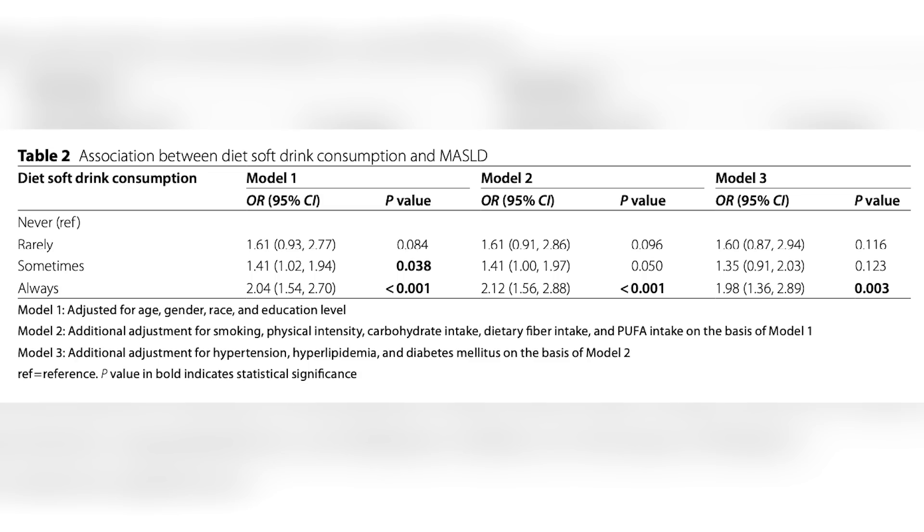That means any difference between the groups can be assumed to be from the treatment rather than some inherent property of the participants themselves. That is the major reason randomized control trials are considered the highest quality level of evidence. I'm not saying it's a bad study — I'm just saying it's important to understand levels of evidence. When we look at this, yes, they did find that people who consumed more diet soda had a higher incidence of MASLD.